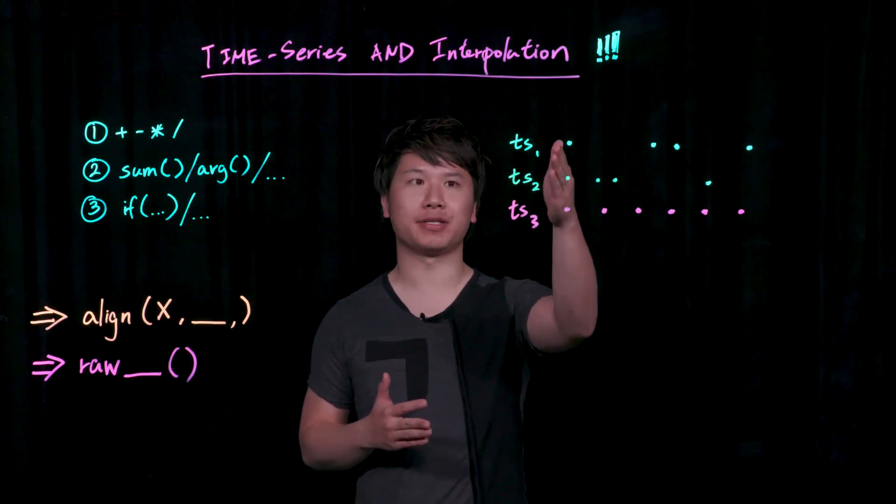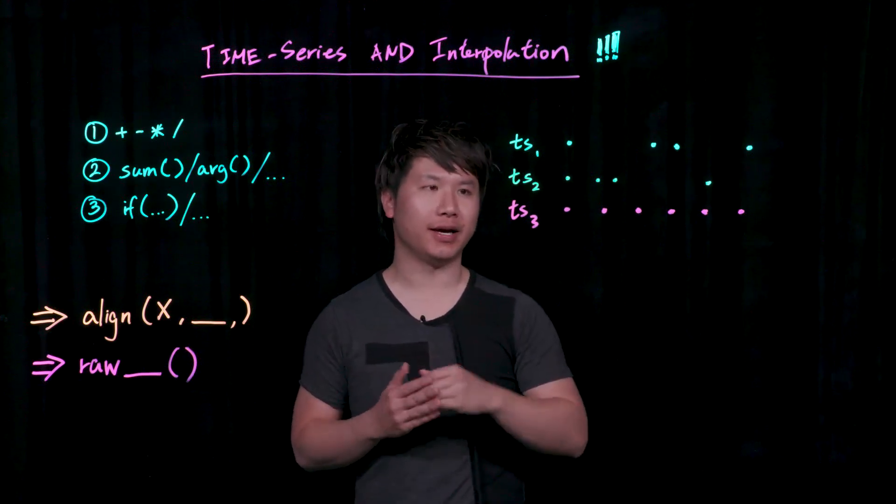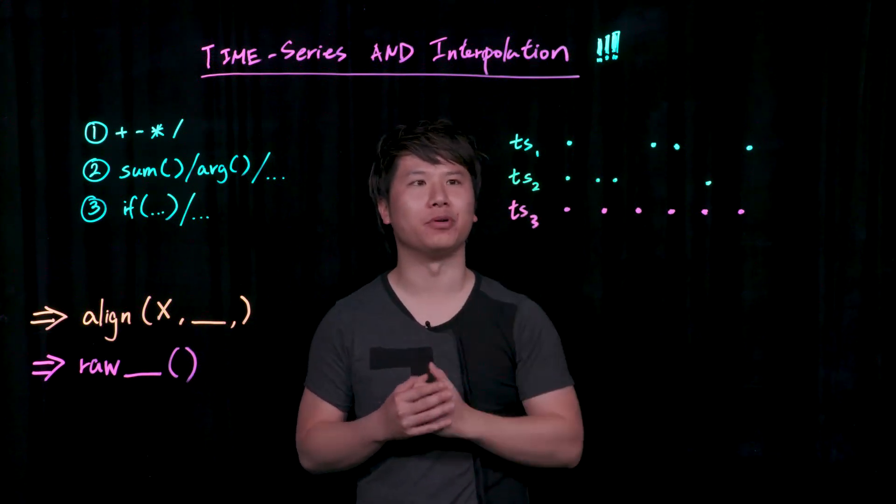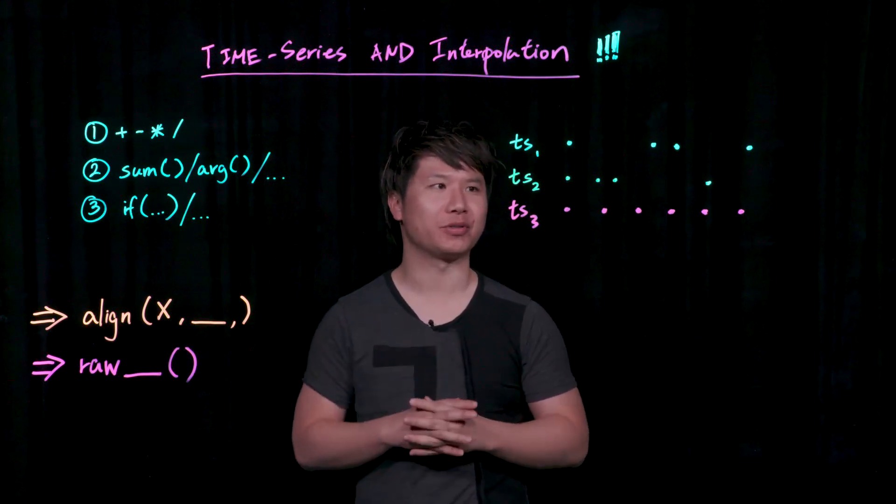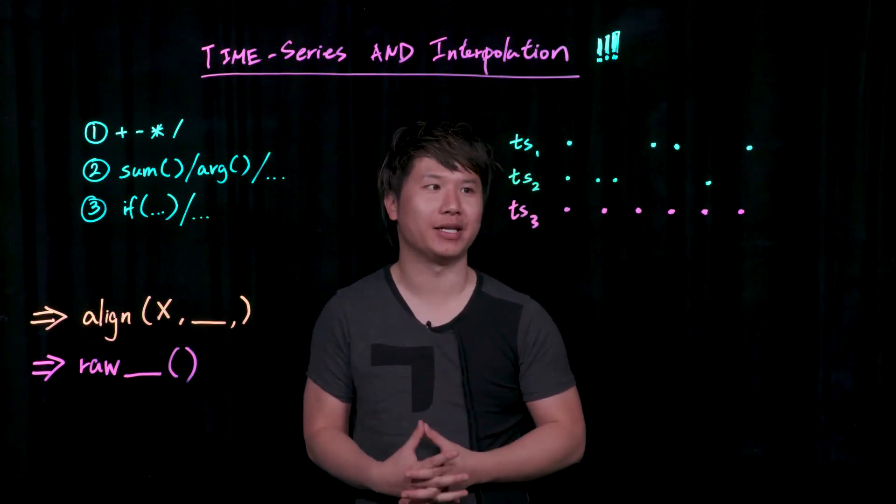You can imagine, for example, in this case, you have time series 1 and time series 2, and this is kind of an extreme example, where they're just reporting data at different intervals. Sometimes it's just lost and not actually reporting any data.